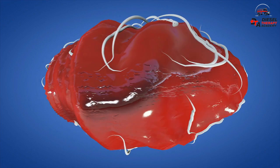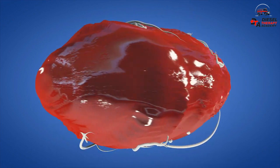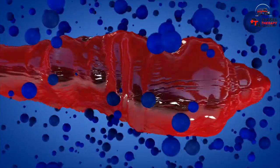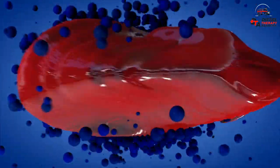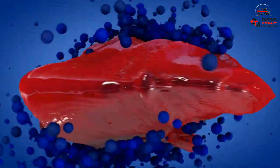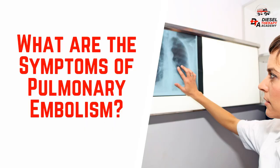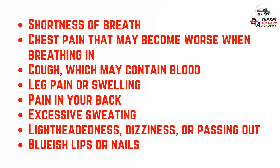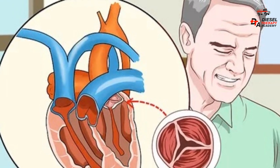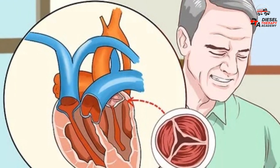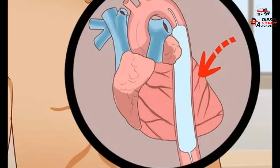A pulmonary embolism (PE) is a blood clot that develops in a blood vessel in the body, often in the leg. It then travels to a lung artery, where it suddenly blocks blood flow and causes necrosis of the lung tissue. This greatly reduces the amount of surface area available for gas exchange. Symptoms of pulmonary embolism include shortness of breath; chest pain that may become worse when breathing in; cough which may contain blood; leg pain or swelling; pain in your back; excessive sweating; lightheadedness, dizziness, or passing out; and bluish lips or nails. Obstructive shock occurs when adequate oxygen and nutrient delivery to the organs and tissues of the body is compromised as a direct result of an obstruction to blood flow into or out of the heart.